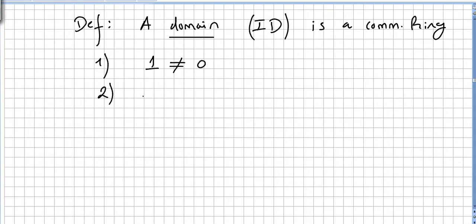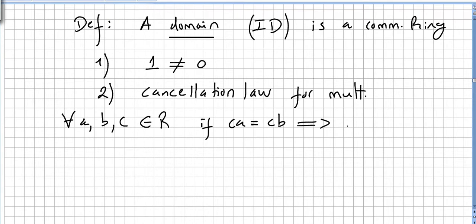Second, the cancellation law, we call it the cancellation law for multiplication. Meaning, for all A, B, and C in the ring, if CA is equal to CB, that means that A is equal to B.